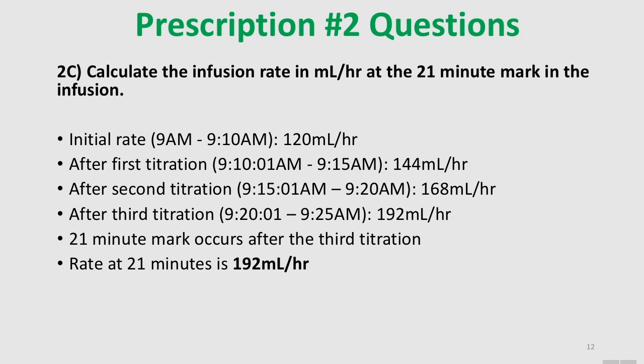Calculate the infusion rate in mL per hour at the 21-minute mark. From 9:00 to 9:10 a.m., the rate was 120 mL per hour. After the first titration at 9:10, the rate became 144 mL per hour. After the second titration at 9:15, the rate was 168 mL per hour — that's within 20 minutes. The question asks for the 21-minute mark, so you titrate up a third time, giving 192 mL per hour. The rate at 21 minutes is 192 mL per hour.